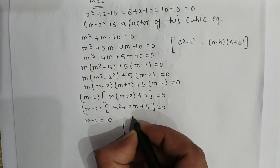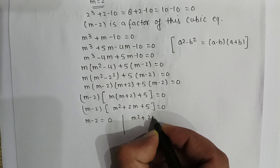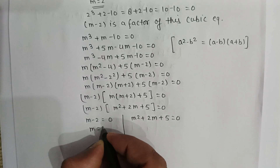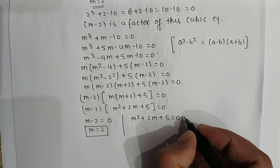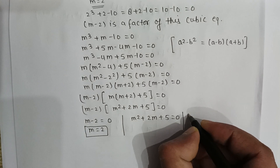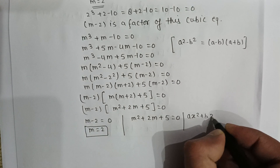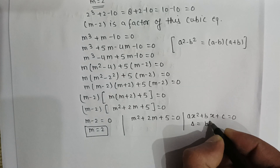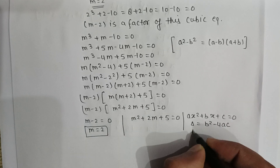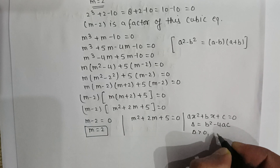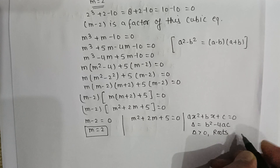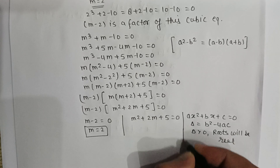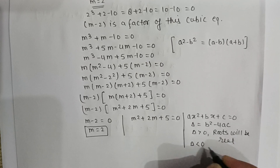So m minus 2 multiplied by m squared plus 2m plus 5 equals 0. Therefore m minus 2 equals 0, or m squared plus 2m plus 5 equals 0, giving m equals 2. As we know, for a quadratic equation in the form ax squared plus bx plus c equals 0, the discriminant delta equals b squared minus 4ac. If delta is positive, the roots will be real.